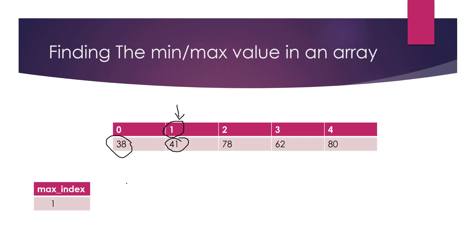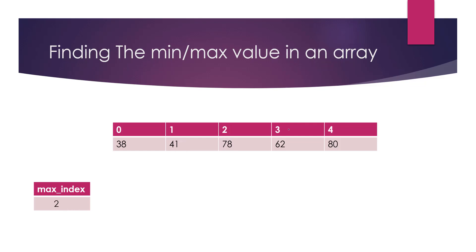We go to the next element at location 2 and check: is 78 greater than the element at the current maximum index, which is 41? Since 78 is greater than 41, the maximum element is now at location 2. We update the maximum index variable to location 2.